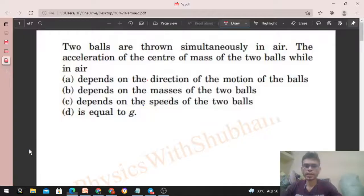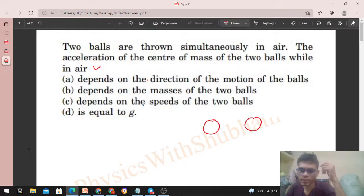Okay, hi everyone. Today let's discuss this interesting problem. It says two balls are thrown simultaneously in air. The acceleration of center of mass of the two balls while in air. So, two balls and both are in the air. Then what will be the acceleration of each one?